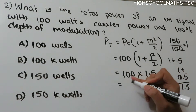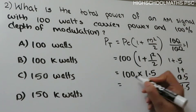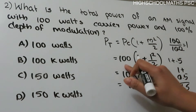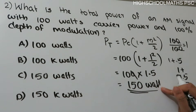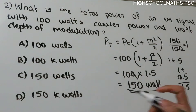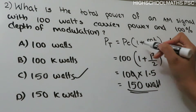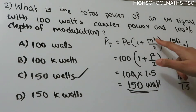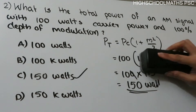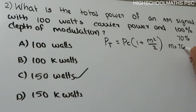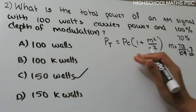The answer is 150 watts, Option C. Remember the formula: Pt = Pc × (1 + m²/2). Now, if the depth of modulation were 70%, then m = 70/100 = 0.7. We would calculate Pt = 100 × (1 + 0.7²/2) = 100 × (1 + 0.49/2) = 100 × (1 + 0.245) = 100 × 1.245 = 124.5 watts.